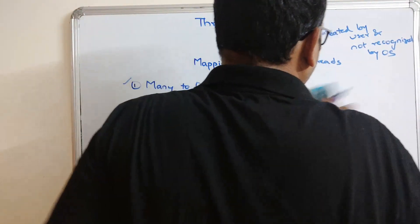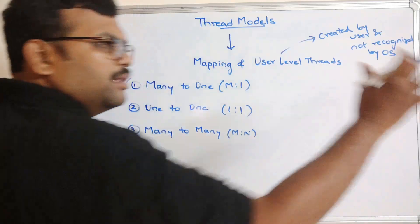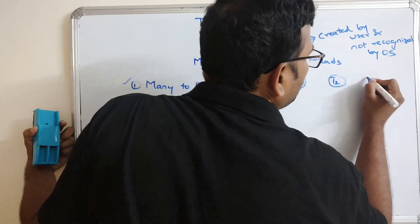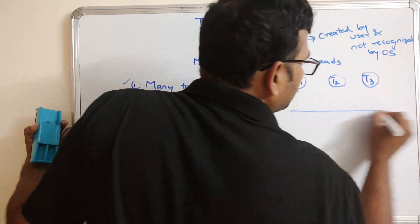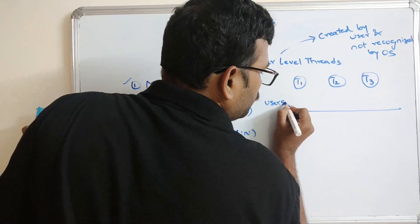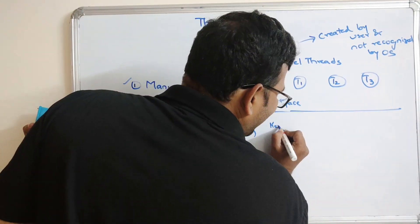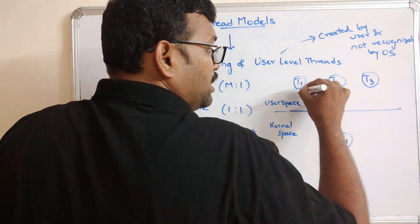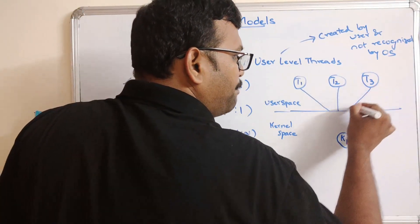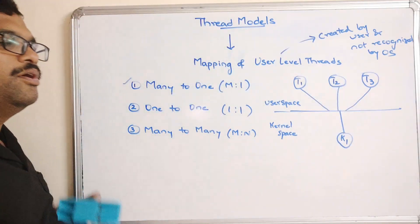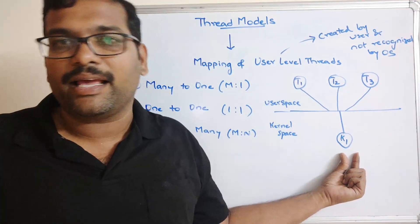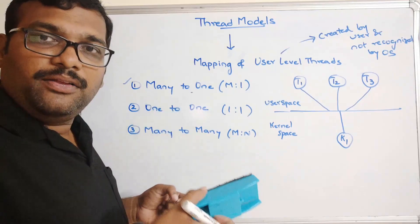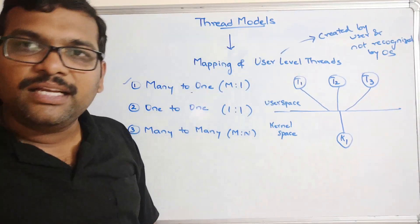Coming to the many-to-one model: there are different threads — thread one, thread two, thread three — in the user space. There is a single kernel in the kernel space, say K1. All these threads are mapped to that single kernel. This type of model is called many-to-one, meaning many user level threads are mapped to a single kernel.